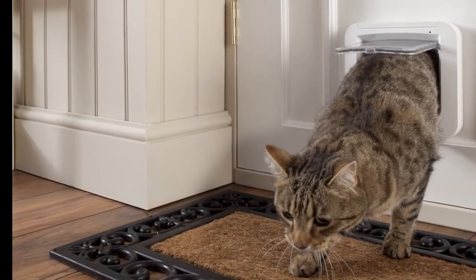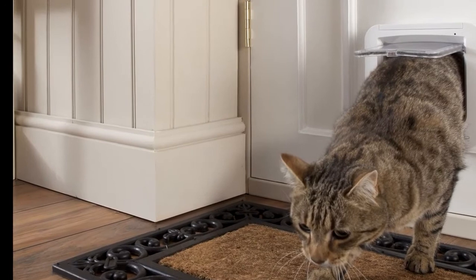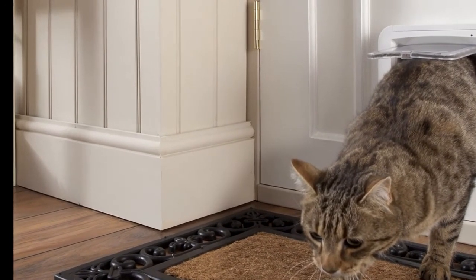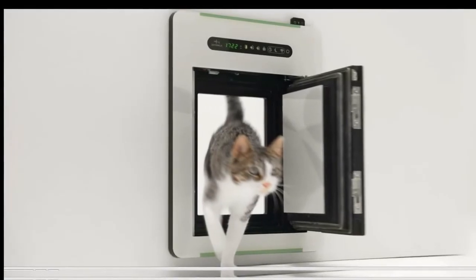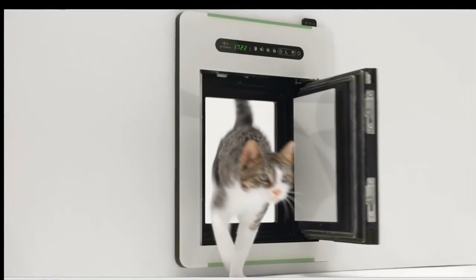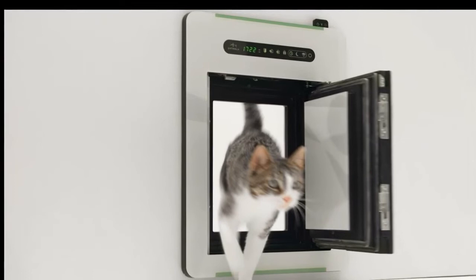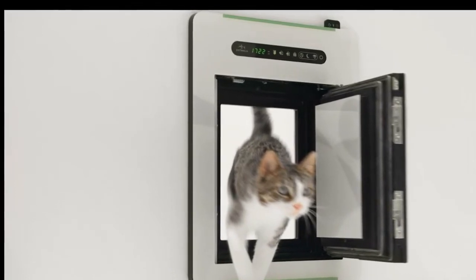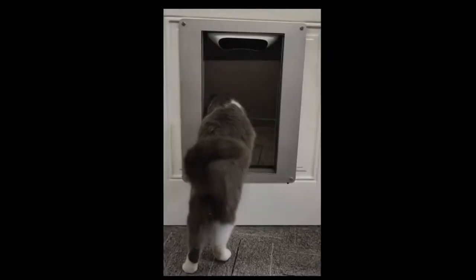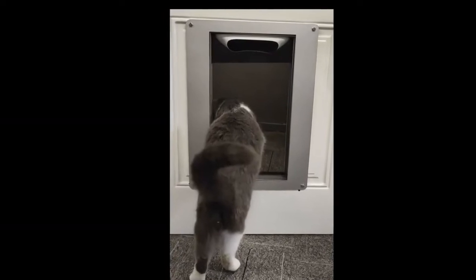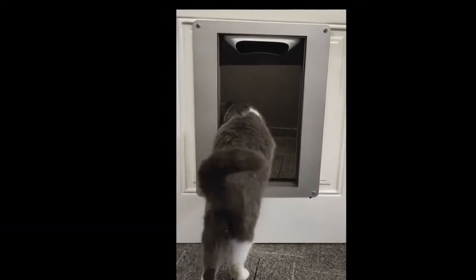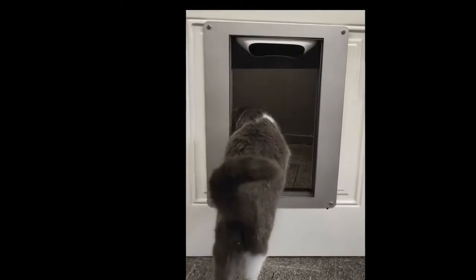Smart pet doors are far from a new idea and typically rely on either reading an RFID microchip embedded in a pet that's already there to make them easier to identify and find when lost, or a special electronic collar that gives the animal a unique form of digital identification. Given just how many smart pet doors are now available proves that both approaches work well enough, but the creators of the Petvation think they can be made even smarter.